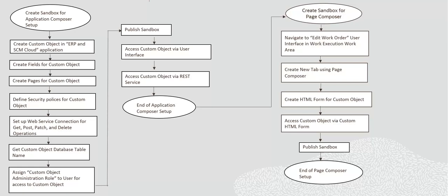The flow diagram being presented here lists all the Application Composer and Page Composer setups. The flow begins with Application Composer Setups. The integration setup is done in Sandbox — therefore, create a Sandbox with the Application Composer tool. Next, create the custom object in ERP and SCM Cloud application, then create fields for the custom object, create landing and creation pages to search and create custom objects, and define security policies for custom object. Configure policies to provide create, read, update, and delete grants to appropriate roles.